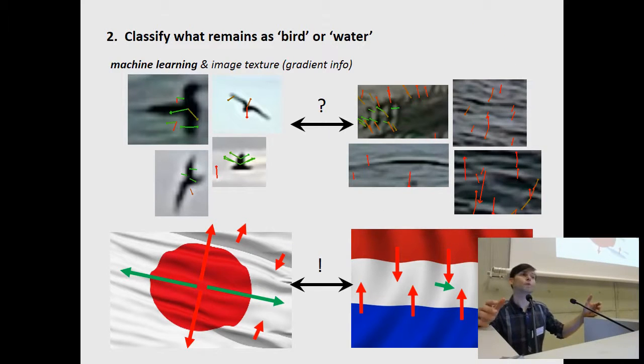But then what remains, there's still some water and birds, there's a combination. And you have to train a computer, you have to teach a machine how to make a difference between both. A computer or a machine can see the pixel values.